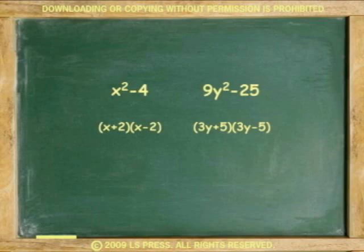The first example, x squared minus 4, is factored into x plus 2 times x minus 2, because the square root of x squared is x, and the square root of 4 is 2.